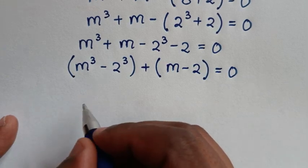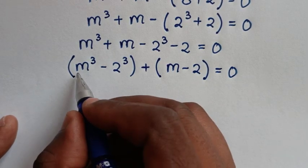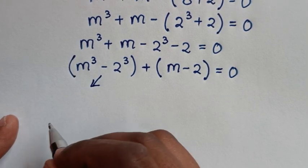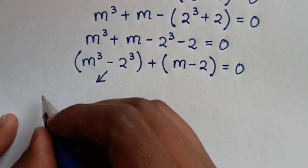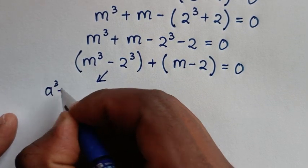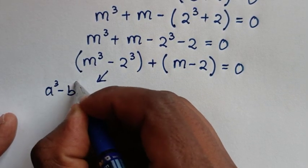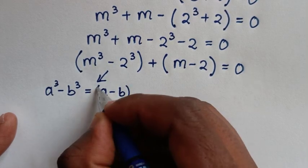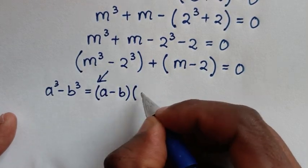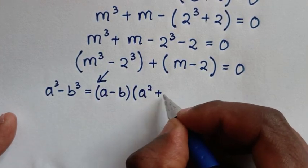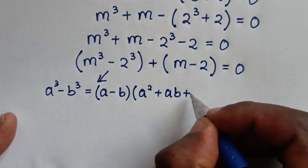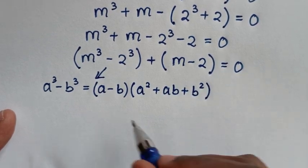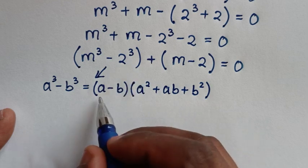From this part, m³ minus 2³ is in the form of the algebraic rule: a³ - b³ = (a - b)(a² + ab + b²).